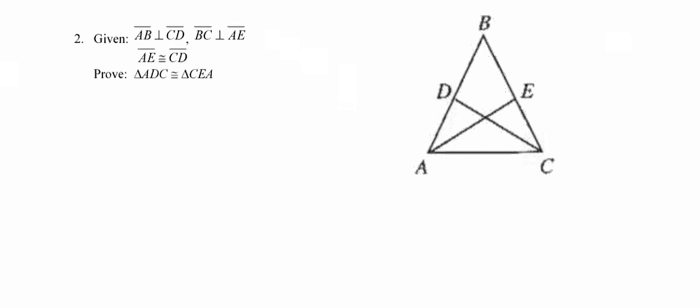Moving ahead to number two, I'm going to mark the perpendicular in the picture. Just a brief reminder: when you see this symbol, it means perpendicular — it doesn't mean anything is bisected, only perpendicular. I'm going to mark right angles where AB and CD intersect, and where BC and AE intersect. Segments AE and CD are congruent, which is a bit hard to show in this diagram because those segments are made up of two smaller segments. The triangles we're trying to prove congruent are triangle ADC — outlined in red — and triangle CEA — outlined in blue — and again these are overlapping triangles.